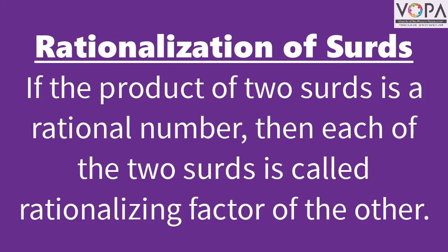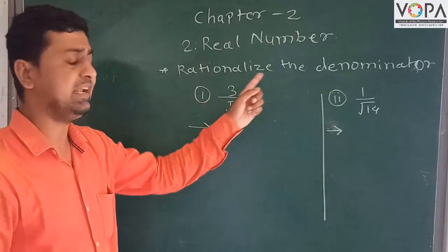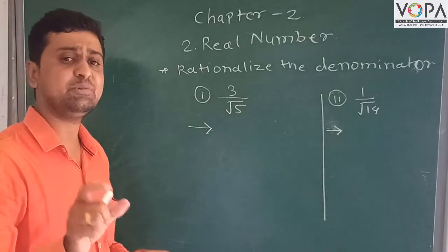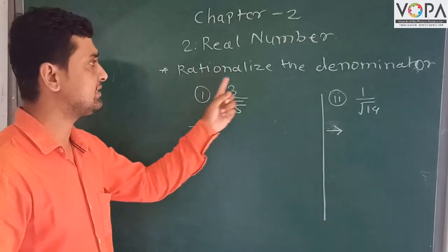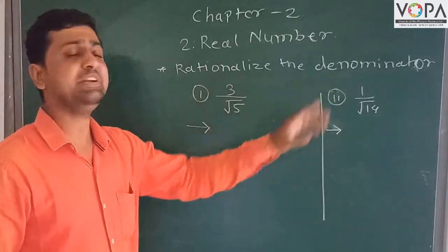Students, if the product of two surds is a rational number, then each of the two surds is called a rationalization factor of the other. This topic is: Rationalize the Denominator.